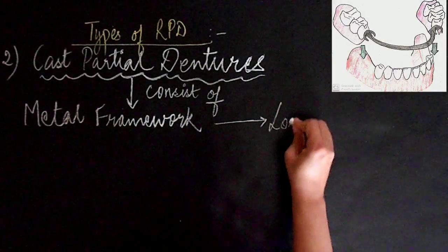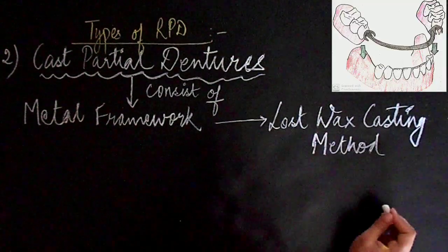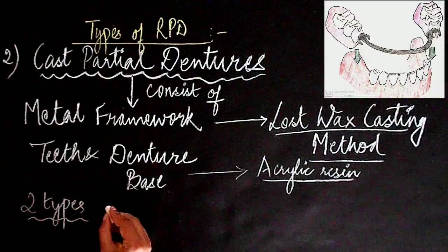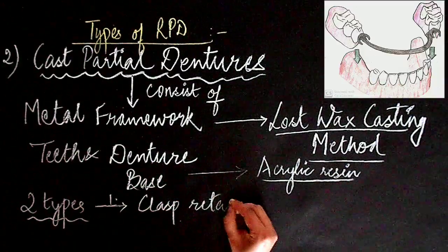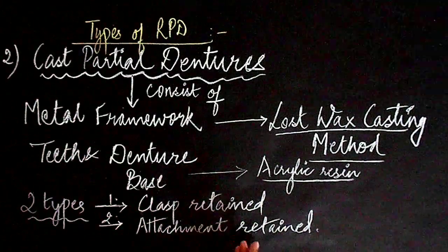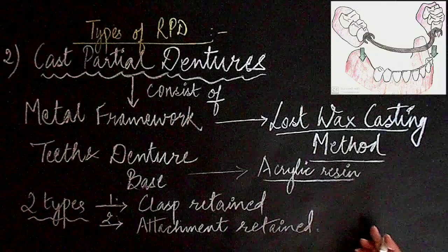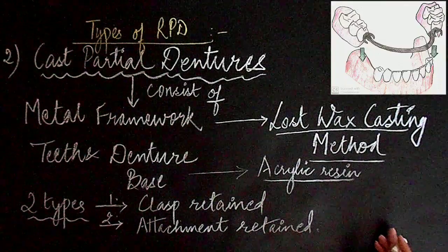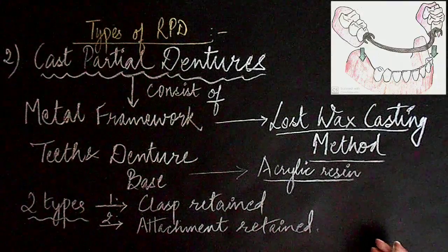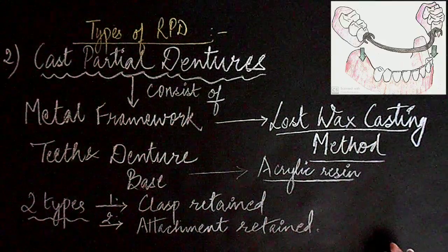Second type is cast partial dentures, which basically consist of a metal framework fabricated by lost wax casting method. Teeth and denture base are made of acrylic resin, and these are of two types: clasp retained cast partial dentures and attachment retained cast partial dentures. I'll be talking in detail about all the components of cast partial dentures in upcoming videos, which will help you understand the concept about designing of cast partial dentures and how to proceed step by step clinically to provide well-planned treatment that can fulfill the functional and aesthetic demands of the patient.